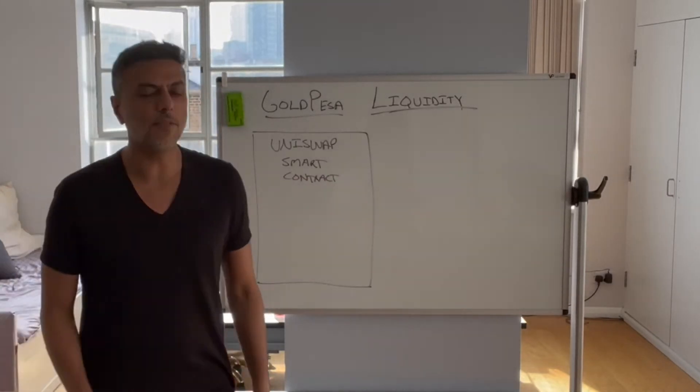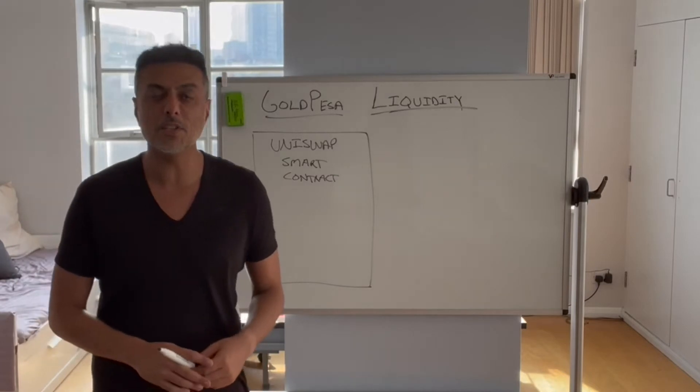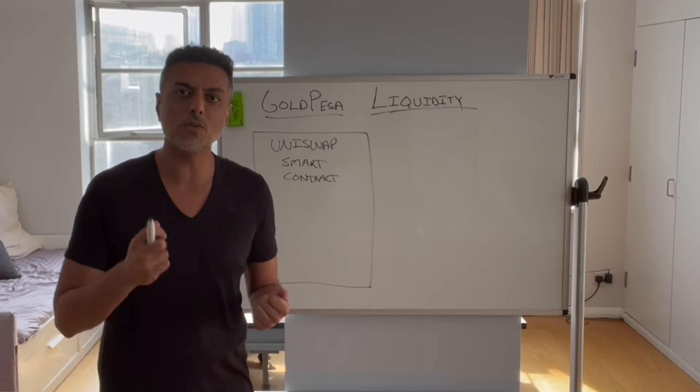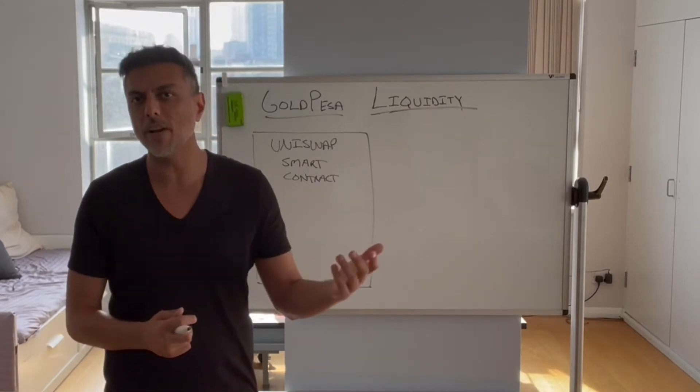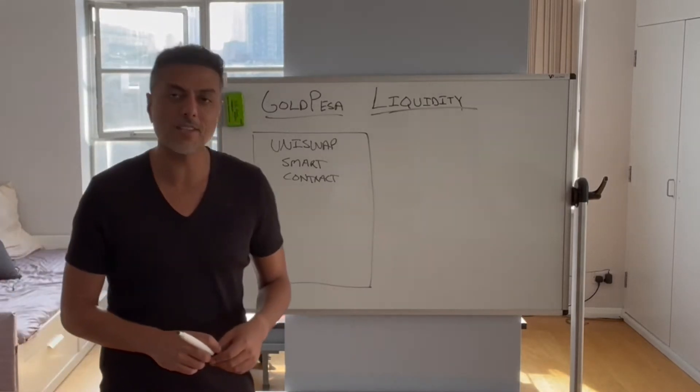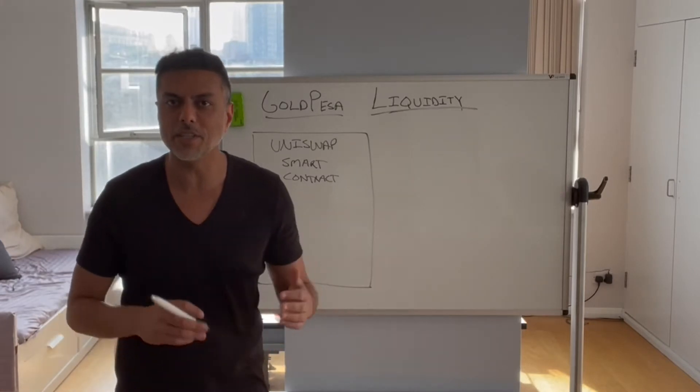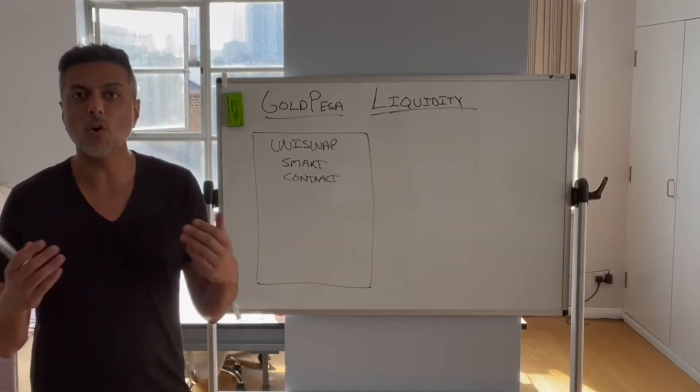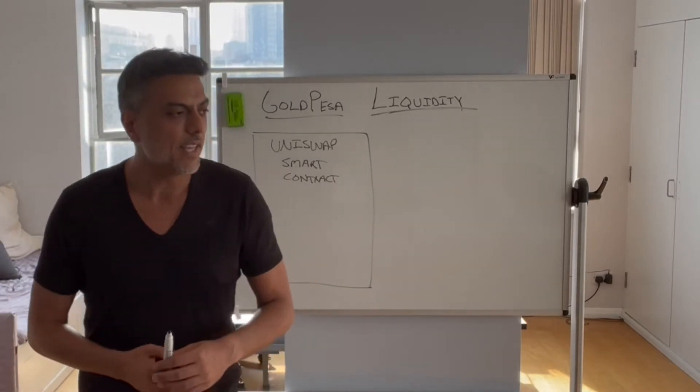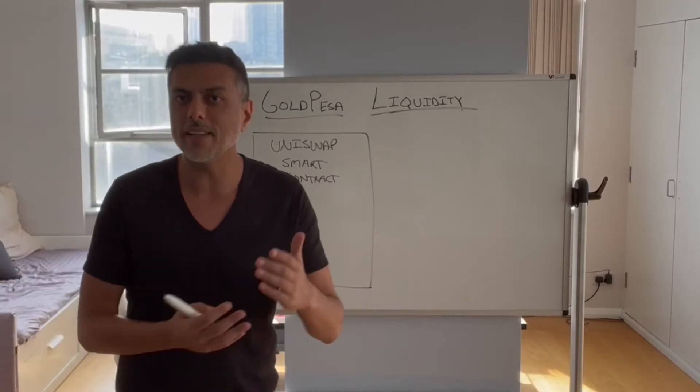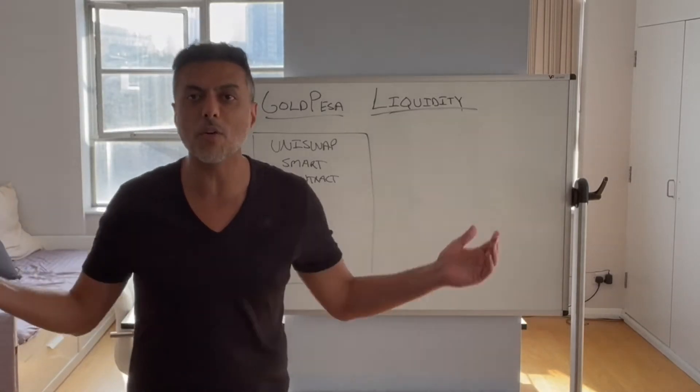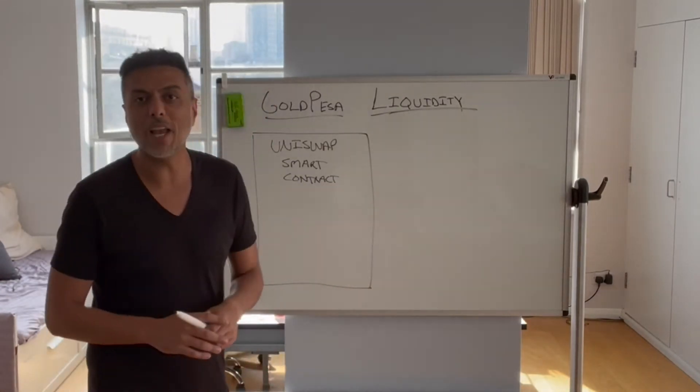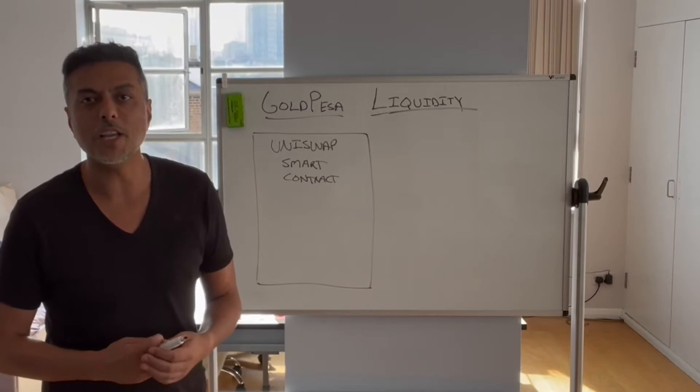If you think about what a Forex Bureau does, it's really just very simple functionality. You take in one currency and deliver another currency at a given rate. This functionality doesn't require real estate and salaries. You could code it into a smart contract, which is like a robot with a given set of instructions. Then you copy that robot and its instructions onto many computers around the world, which makes it decentralized and safe from any single party changing those rules.